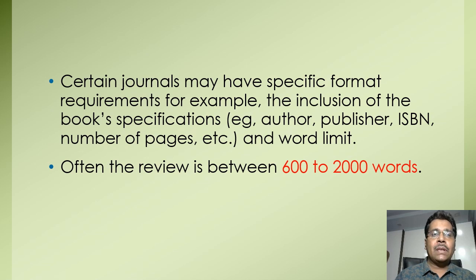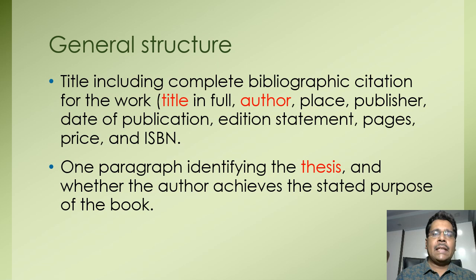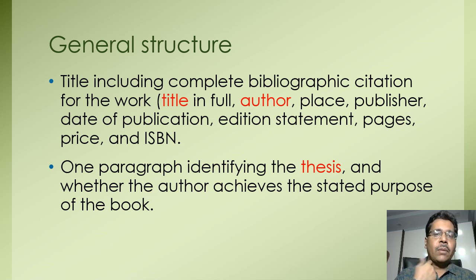The format of book reviews is quite open. Certain journals have specific requirements — for example, starting with the author, publisher, ISBN number, number of pages, or other special characteristics of the book. There are also word limits depending on the journal, but often the review is between 600 to 2,000 words. Generally there may not be a strict structure, but certain journals insist on certain structures.